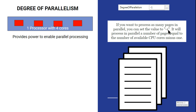So what is the meaning of Degree of Parallelism? If you want to process as many pages in parallel as possible, you set the value to minus one. That means it will process pages in parallel equal to the number of available CPU cores minus one. For example, in your laptop, let's say there are four cores, but you have opened a couple of applications and one processor is currently being utilized by those applications.